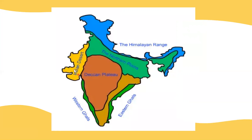This picture clearly shows, with color representation, all the ranges: the Himalayan ranges are shown in blue, the Northern Plains in green, the Deccan Plateau in brown, the Eastern Ghats in green, and the desert in yellow.